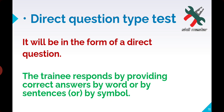Next is direct question type test. In these, questions are completely direct — asking things like 'where is this place?' or similar. The correct answer can be given in one word, one sentence, or even through a gesture, poster, or symbol. That is the direct question type test — where you are asked directly without any roundabout framing.